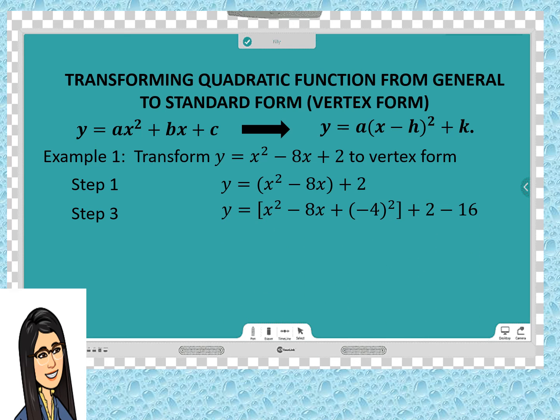Get one half of the coefficient of x, which is -8. So, one half of -8 is -4. The square of -4 is 16. Since they are both in one side of the equation, add and subtract is our process. Since we add (-4)² inside the parenthesis, then we subtract 16 outside the parenthesis.